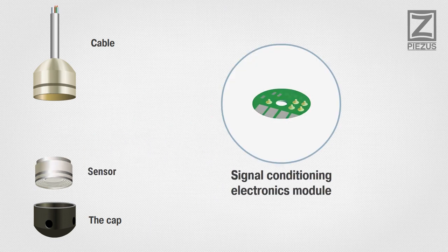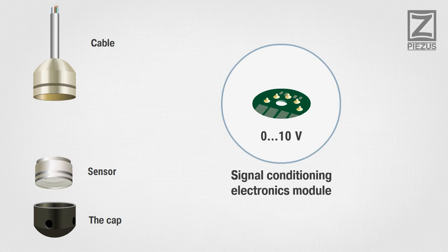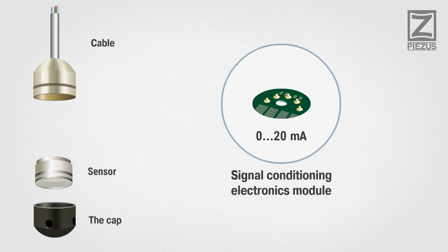The Signal Conditioning Electronics Module converts the sensor signal into standard normalized electrical output, such as 4 to 20 milliamps, 0 to 10 volts, or 0 to 20 milliamps. Various models are also capable of digital communication using HART or Modbus protocols.